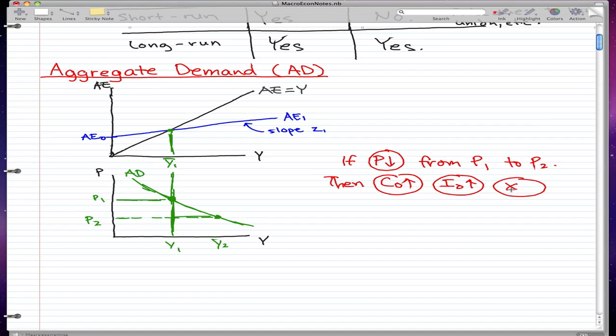These three factors look kind of familiar, right? Excluding government, we have something that we already know, and that's autonomous expenditure.